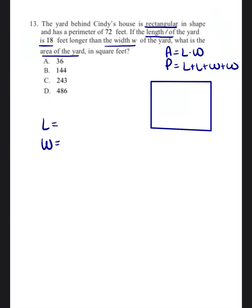So I would recommend starting with the measurement that doesn't say it's 18 feet longer or 18 feet less. Start with the measurement that's just by itself, which is the width. And so for the width, I'm just going to write W.